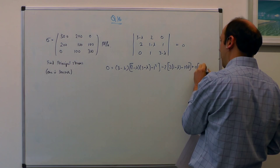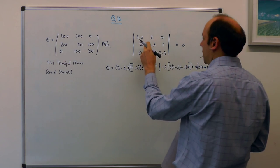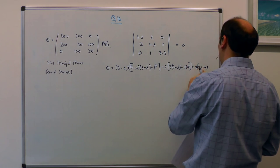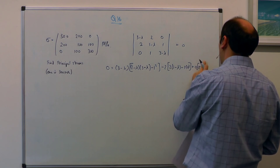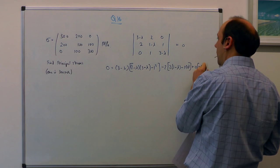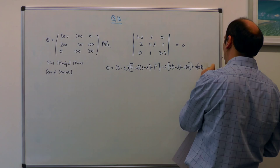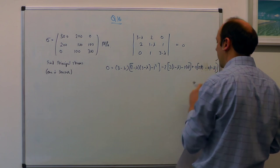But 2, 3 minus lambda, sorry, 2 times 1, 2 times 1 minus 0 times 1 minus lambda.